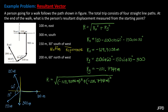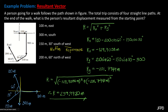Solving for the magnitude of the resultant by inputting this equation on the calculator, the magnitude of the resultant of these displacement vectors is 239.9920 meters.